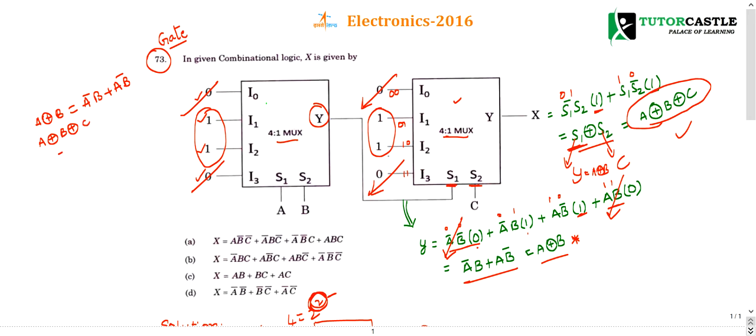So A XOR B everybody will say A bar B plus A B bar. What is 3 input XOR? This also you should know. This is nothing but 3 terms you take. A B C. Every time you apply negation at one input, means first time I am applying negation at this point. Next again you write A B C, apply negation here. Next time A B, again you apply at C. Then finally for the last term, you don't apply any negation.